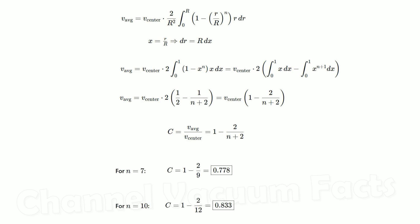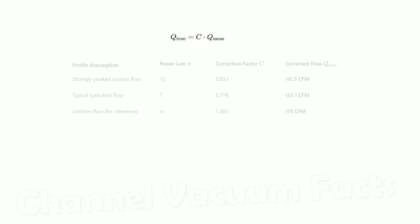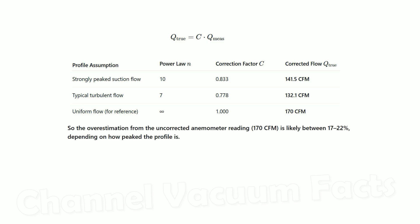Solving this for values of n across our target range of 7 to 10 yields the two correction factors. These can now be used to calculate the corrected airflow measurement. A measurement value of 170 CFM, or about 80.2 litres per second, is actually only between 132 and 142 CFM, so about 17 to 22% less.